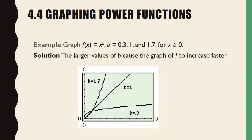There they are, all three of them. You'll notice x to the 1st is a line — that should not be a big surprise. x to the 0.3 is the lower curve, and x to the 1.7 is the faster curve. What they want you to see here is that the larger the power, the greater the y value or the faster the y value will increase.